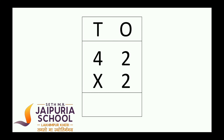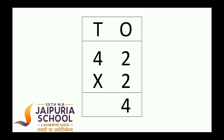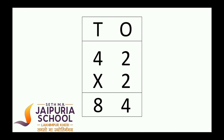Let's solve. First, write the numbers in the place value chart. Now, multiply the digit in the ones place with the multiplier 2. So, 2 × 2 is equal to 4 ones. Now, multiply the digit in the tens place with the multiplier 2. So, 4 × 2 is equal to 8 tens.